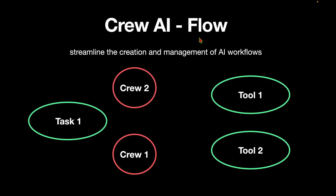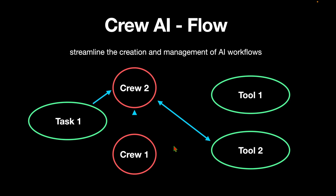In this video, let's move on to the idea of flow. Flow is what streamlines the creation and management of AI workflows. For example, let's say you have a project that involves two crews and you want them to communicate with each other. On top of that you have certain tasks, certain tools, and you want all of these to communicate with each other in order to achieve the common goal — that is where flow comes into play.